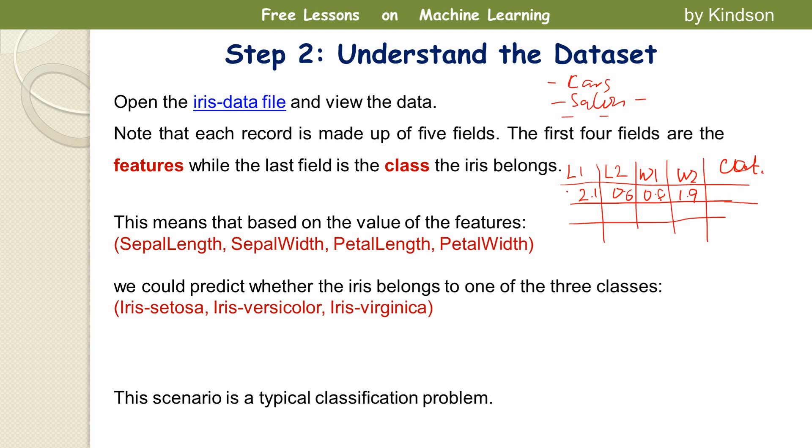So the dataset contains records of four attributes. These attributes are called features. And the last one which is the class is actually the class or the label. Right, so you are using the attributes or the features to predict the class or the label. This is called classification in machine learning.